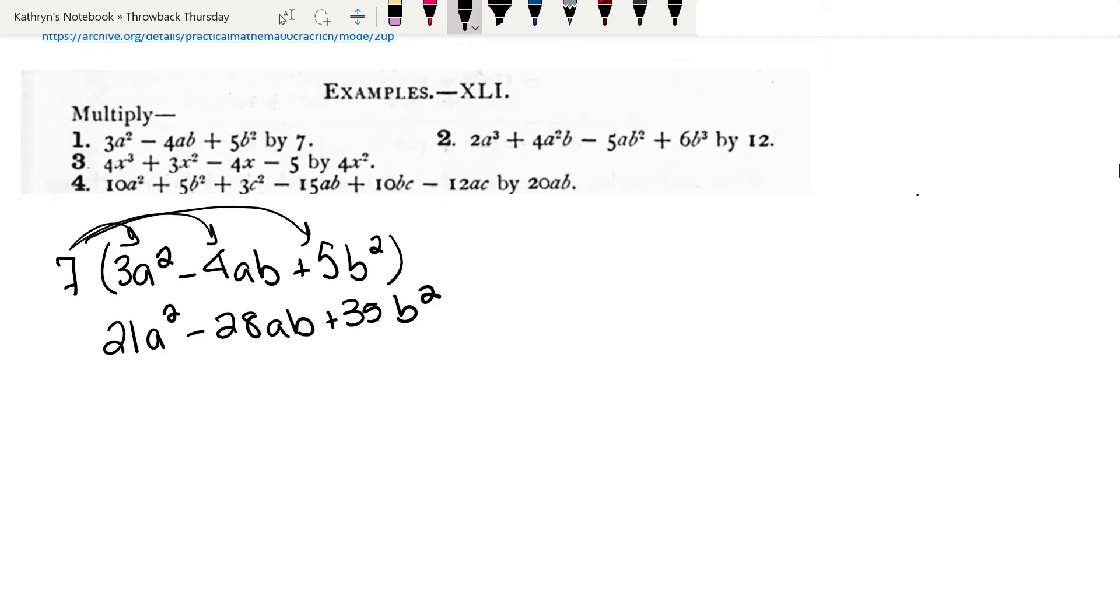Let's do number two. We're going to multiply by 12. This is by 12. So I'm going to write the 12 first. We have 2a³ plus 4a²b minus 5ab² plus 6b³.